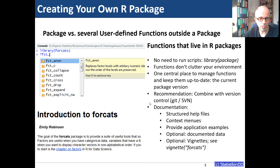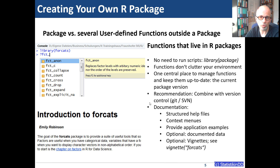You can provide application examples in your help files and document included data — describing what the variables mean. You can also include vignettes, shown in the bottom left screenshot using the forcats package as an example. A vignette is a general form of documentation that introduces your package without immediately diving into specific functions. You can explain to colleagues what the package was created for and which problems it solves, giving them an overview before they dive into specific help pages.